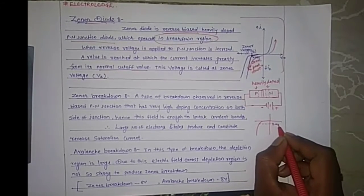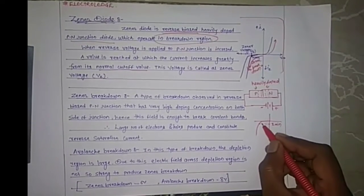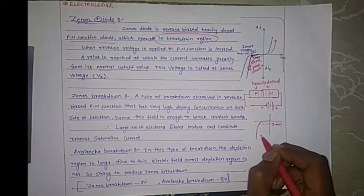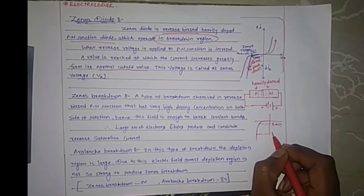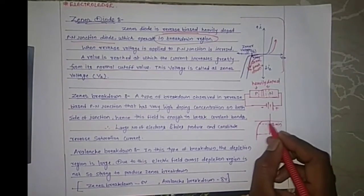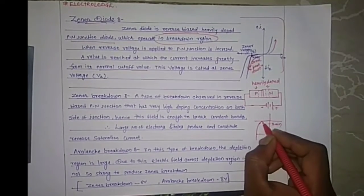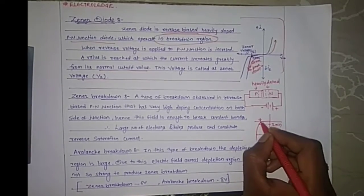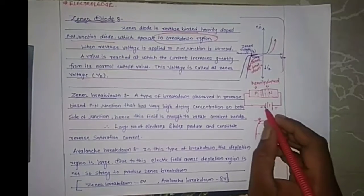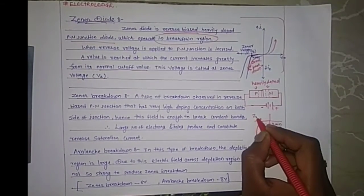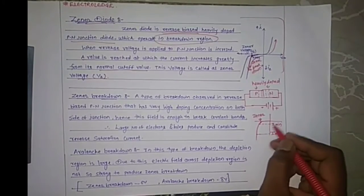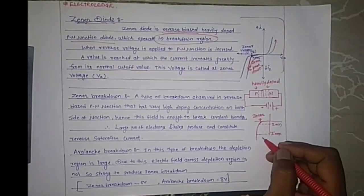A minimum current flows in the reverse voltage, and this is the maximum current that flows in the reverse voltage. The knee point from where the current starts flowing through the circuit is known as the Zener voltage — the point from which the current starts flowing.